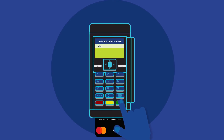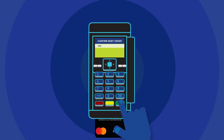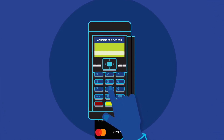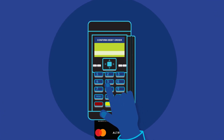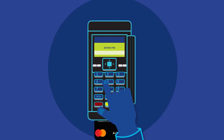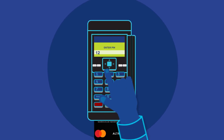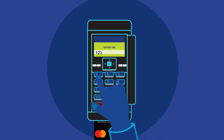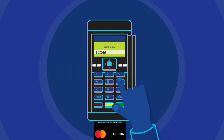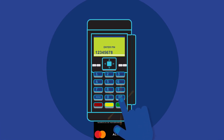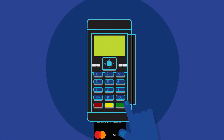The terminal will now prompt you to confirm the debit order. Press the green button to confirm the details. The PIN screen will now appear on the terminal. Your customer will need to enter their PIN number, then press the green button.